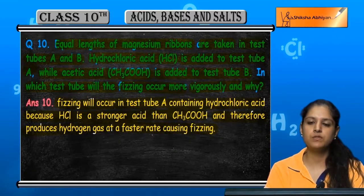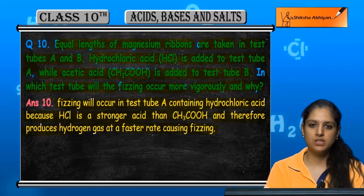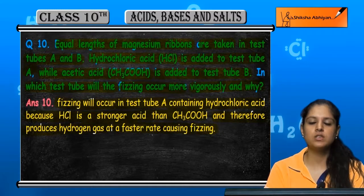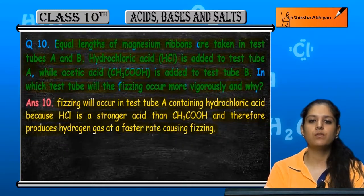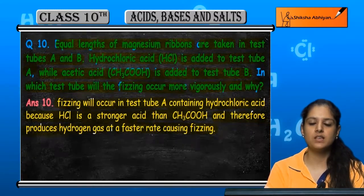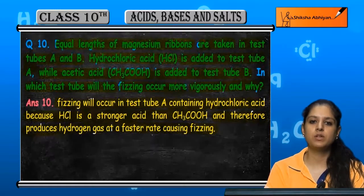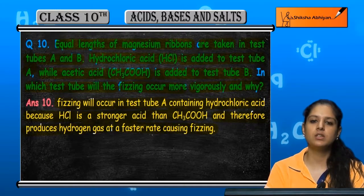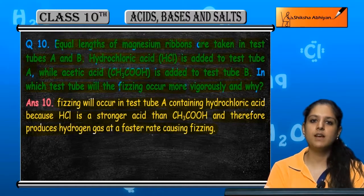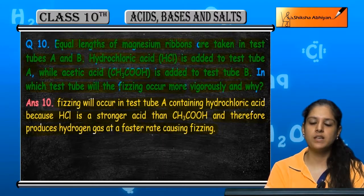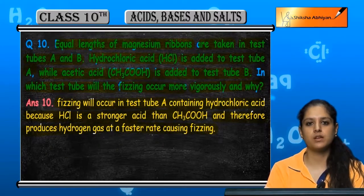Jo fizzing hai woh hoti hai hydrogen gas ki formation ki wajah se. Agar hydrogen gas zyada jaldi banegi to fizzing zyada hogi, aur agar dhiyere banegi to fizzing kam hogi. HCl kyun ki ek zyada strong acid hai, isliye woh zyada fizzing produce karta hai — jaldi hydrogen gas produce karta hai. So test tube A mein fizzing zyada hogi.